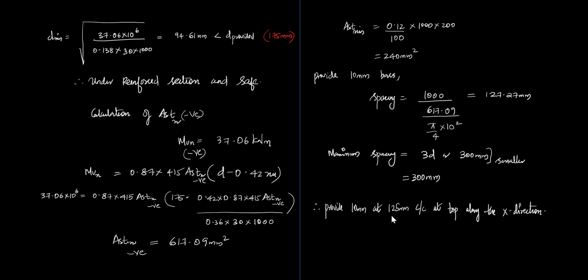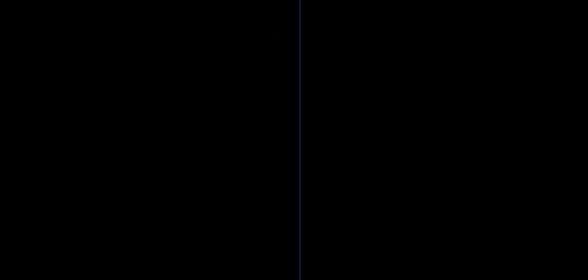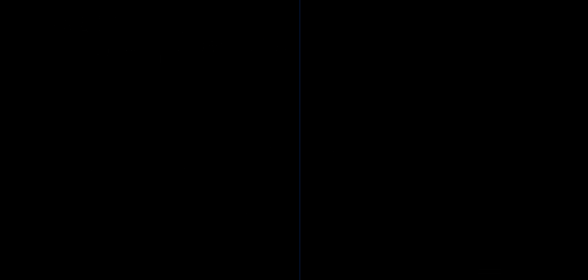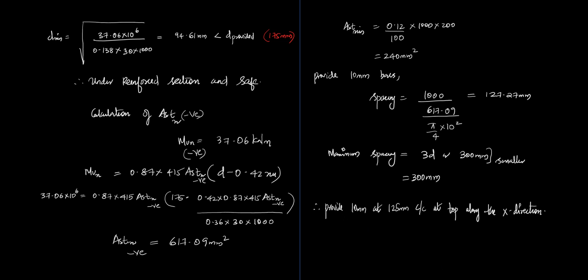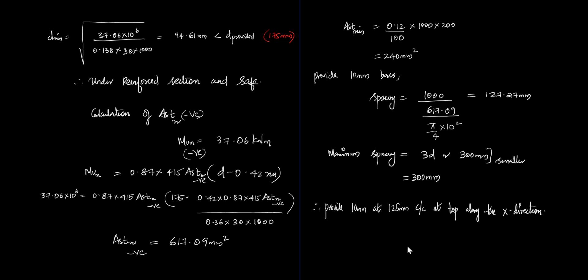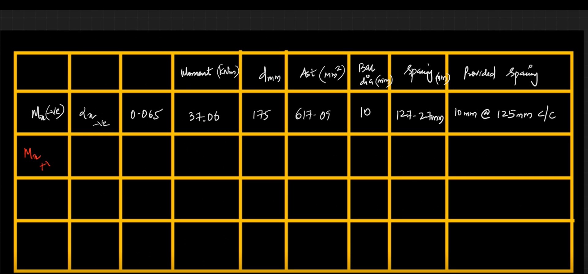Provide 10 mm bars at 125 mm center to center at the top along the X direction, because this corresponds to MX negative — the tension is at the top, so reinforcement is provided at the top. Similarly, for the Y direction moments, the effective depth is reduced by the bar diameter when calculating AST in the Y direction.